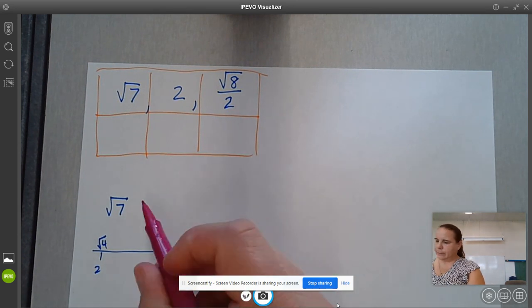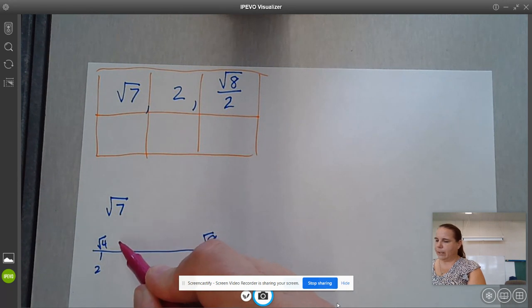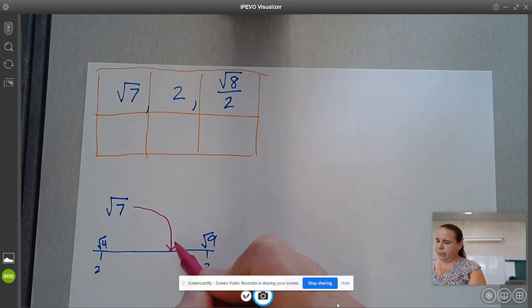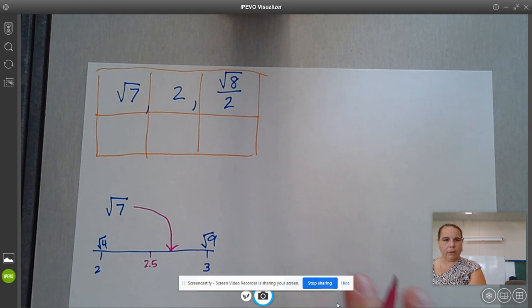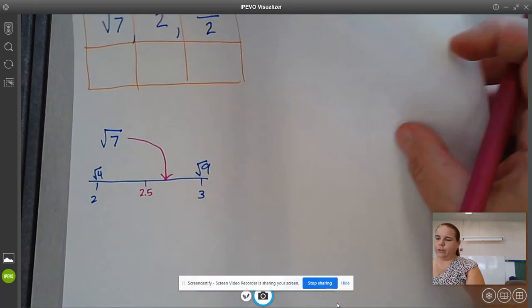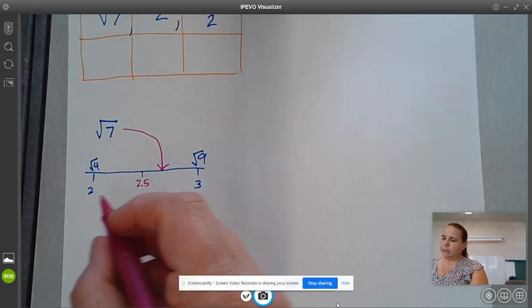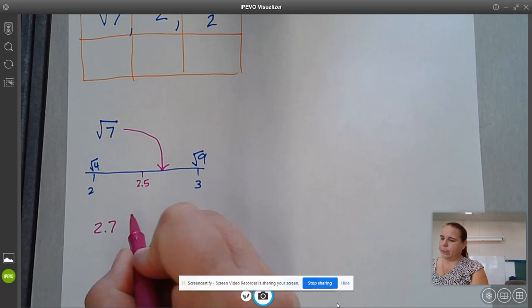Now I think to myself, where is 7 going to be? Square root of 5, 6, 7, 8, so somewhere in here. This would be 2.5, it's probably a little bit more. I'm going to guess 2.6, 2.7. I think I'm going to try 2.7.